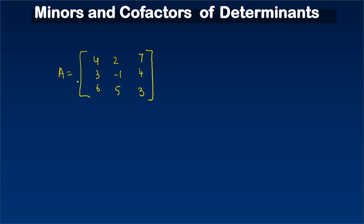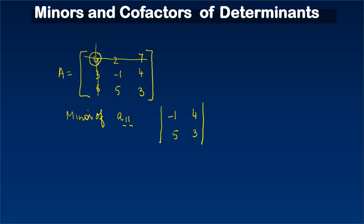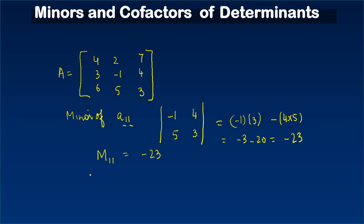Now let's do this for a matrix of order three. Given matrix A, to calculate the minor of a₁₁ — first row, first column — I eliminate the first row and first column. What is left behind is [-1, 5; 4, 3]. The determinant is (-1)(3) − (4)(5) = -3 − 20 = -23, so M₁₁ equals -23.